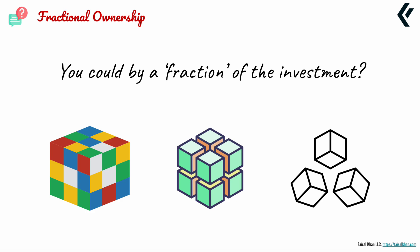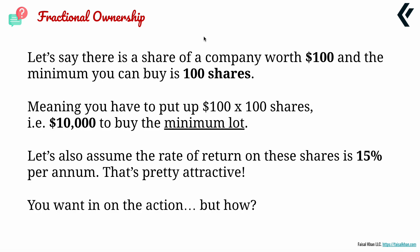Let's give you an example to understand how powerful this concept is. Let's say there's a share of a company worth $100, and the minimum you can buy is 100 shares. So $100 multiplied by 100 shares equals $10,000 — that's the price of the minimum lot. You have to have $10,000 for this company to sell you their 100 shares at $100 a share. And let's assume the rate of return on these shares is 15% — a pretty attractive rate.